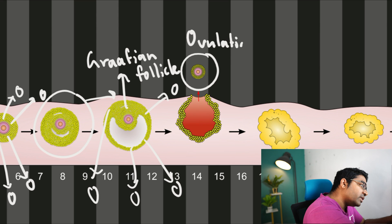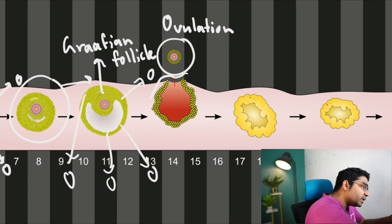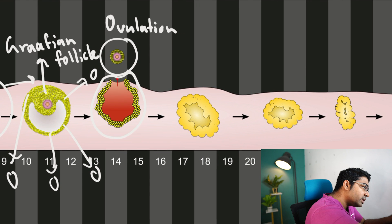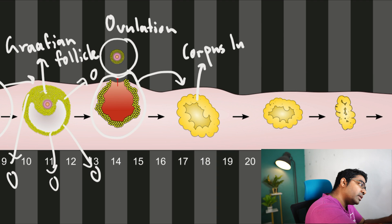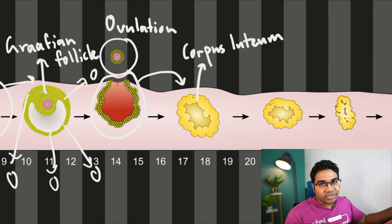What remains of the Graafian follicle after ovulation is the follicular cells. These follicle cells, due to the effect of LH, develop into the yellow mass known as the corpus luteum. The corpus luteum develops due to the action of LH.